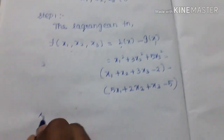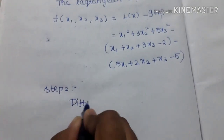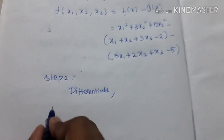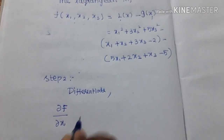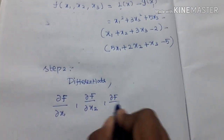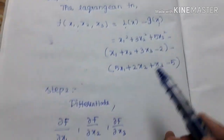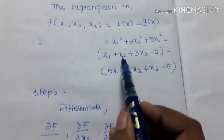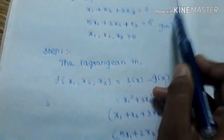We will write the first term and second term. Step 2 is to differentiate. We will differentiate with respect to x1, x2, and x3. There will be two conditions involving lambda1 and lambda2.